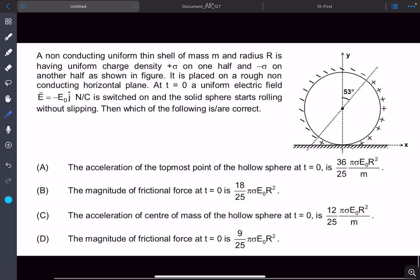Hello everyone, welcome back to my channel. In this video we'll be solving a problem that came in AITS. In this question, we have a non-conducting uniform thin shell with mass m and radius R.